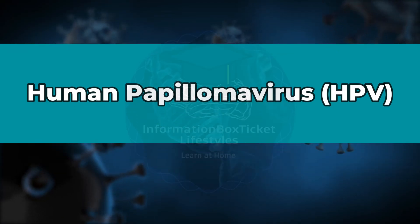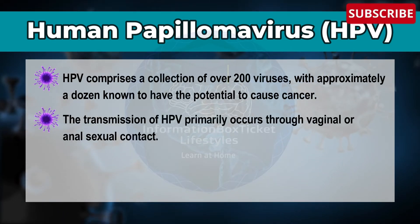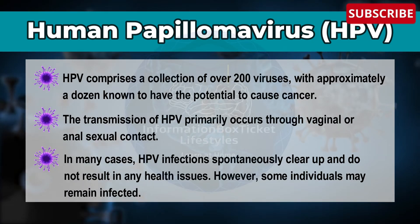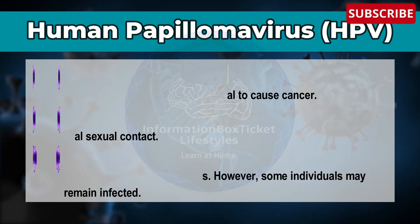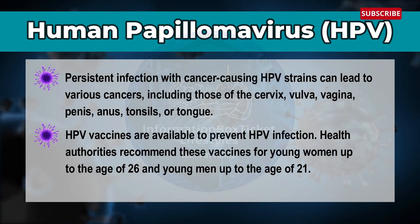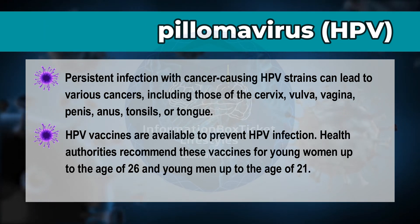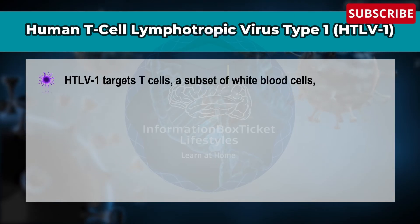Next is Human Papillomavirus. This virus comprises a collection of over 200 viruses, with approximately a dozen known to have the potential to cause cancer. Transmission primarily occurs through vaginal or anal sexual contact. In many cases, HPV infections spontaneously clear up and do not result in any health issues. However, persistent infection with cancer-causing HPV strains can lead to cancers including those of the cervix, vulva, vagina, penis, anus, tonsil, or tongue.